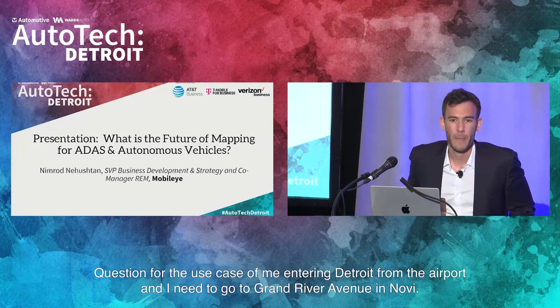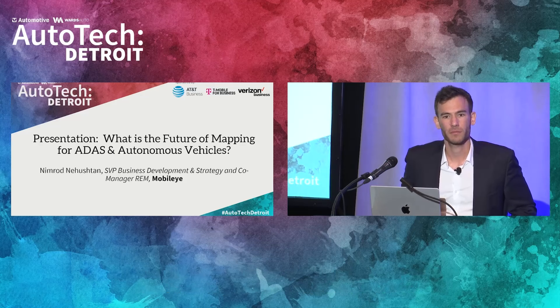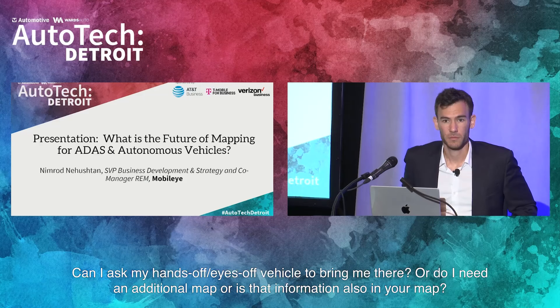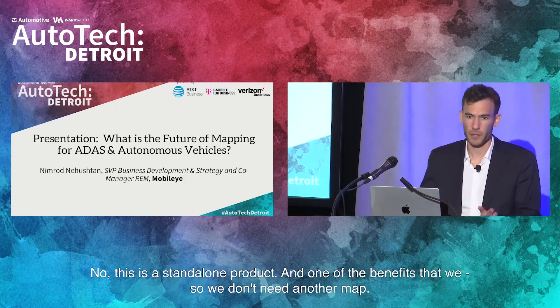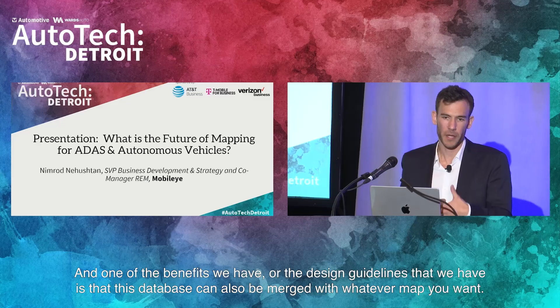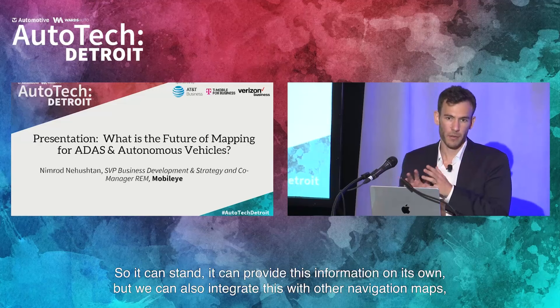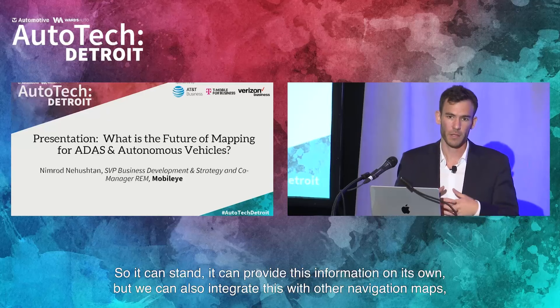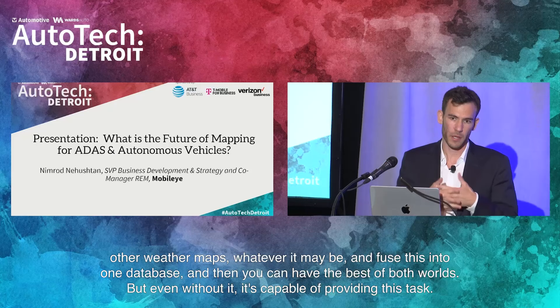Audience question: For the use case of entering Detroit from the airport and needing to go to Grand River Avenue in Novi, can I ask my hands-off, eyes-off vehicle to bring me there, or do I need a separate digital navigation map? Response: This is a stand-alone car scenario. One of the design guidelines we have is that this database can also be merged with whatever map you want. It can provide this information on its own, but we can also integrate this with other navigation maps, weather maps, whatever it may be, and fuse them into one database so you can have the best of all things.